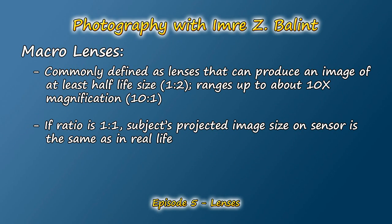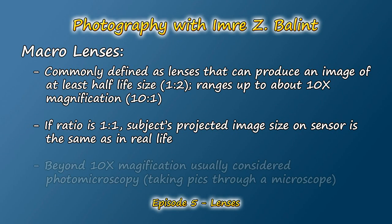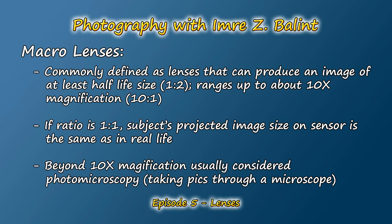For the last topic in this episode, I quickly want to introduce the macro lens. Most definitions I've seen define them as lenses that can produce an image of at least half life size — generally expressed as a ratio of 1:2 — up to about 10 times magnification, or 10:1. Magnifications greater than this are generally considered photo microscopy, in other words taking pictures through a microscope.